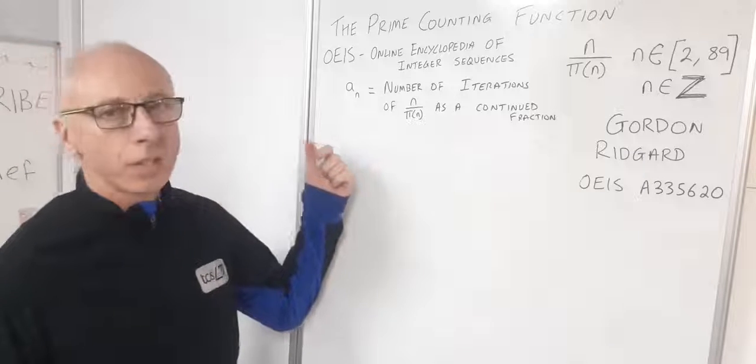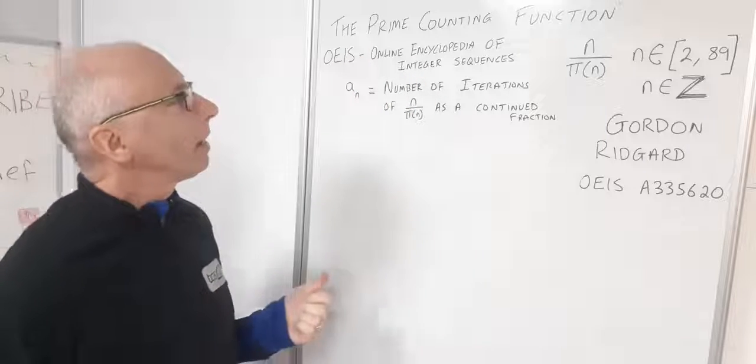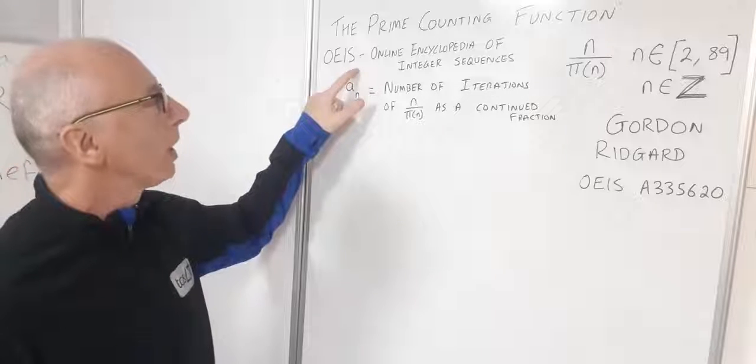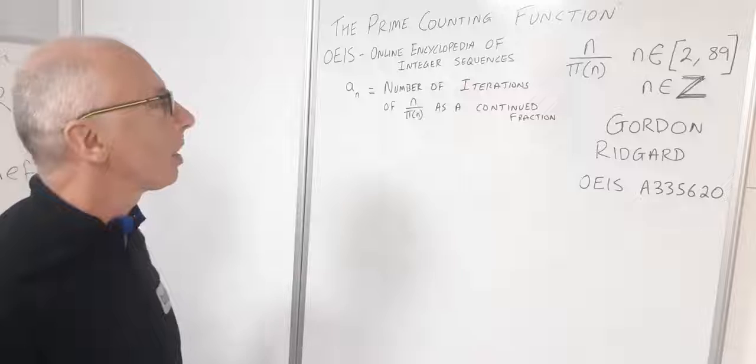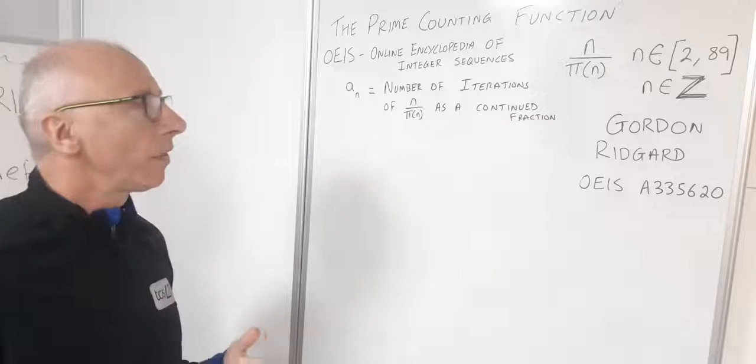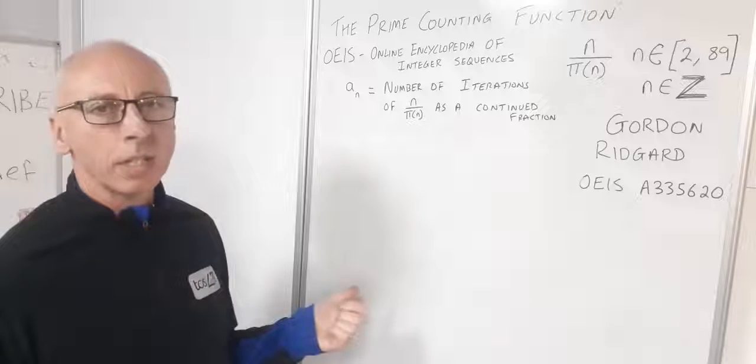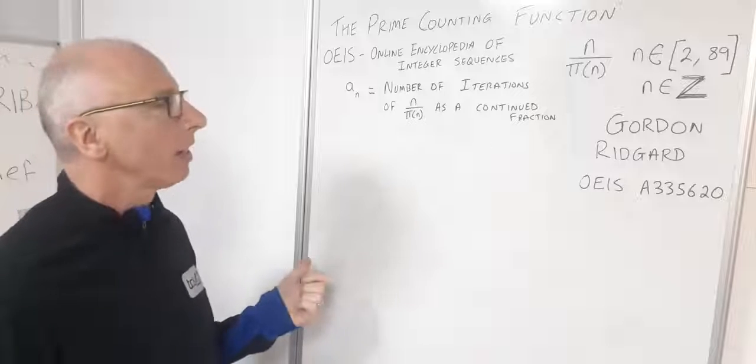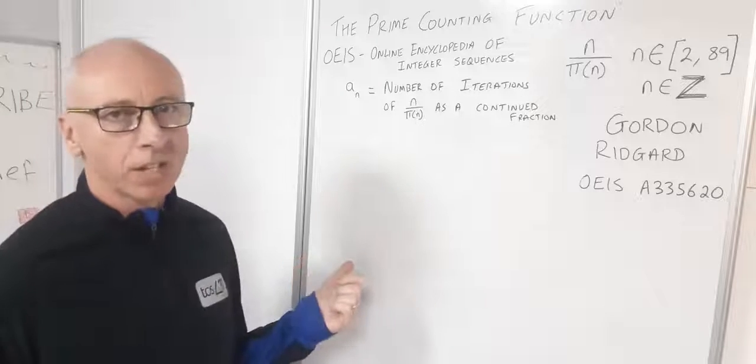This video is one of a series about the prime counting function. In this particular video we're going to pay attention to an entry in the OEIS, the online encyclopedia of integer sequences. It's all about sequences of an interesting function that you've come across and you can submit it to the OEIS and they will publish it if they find it valid.